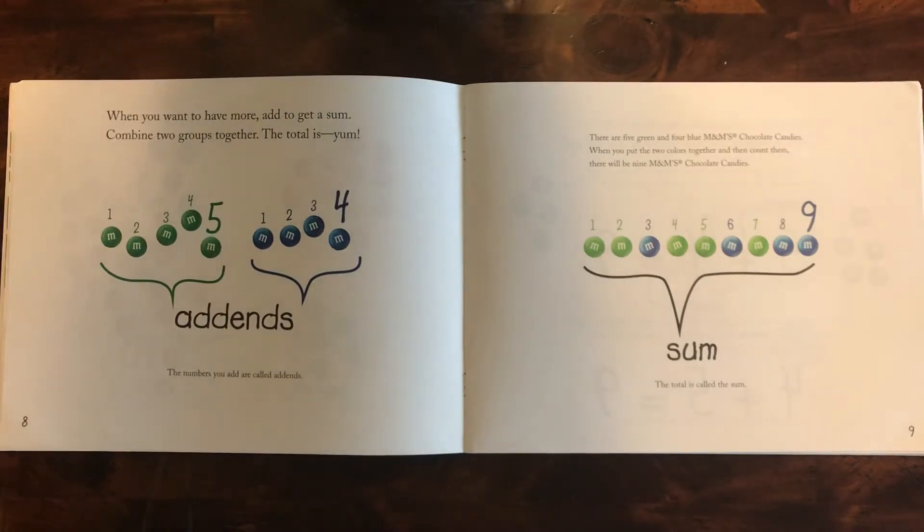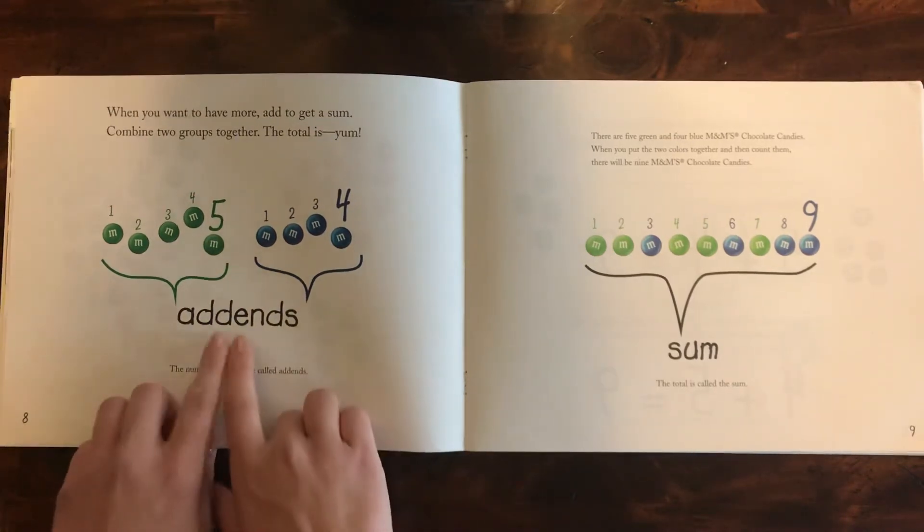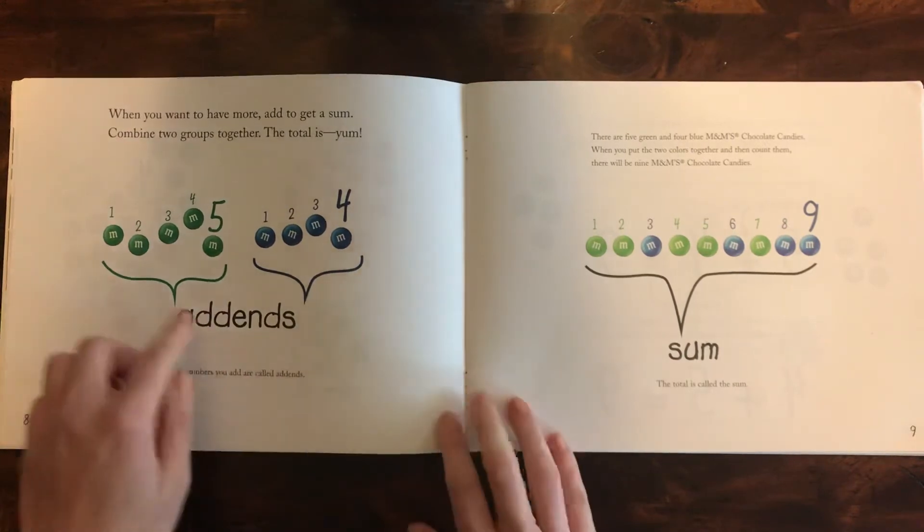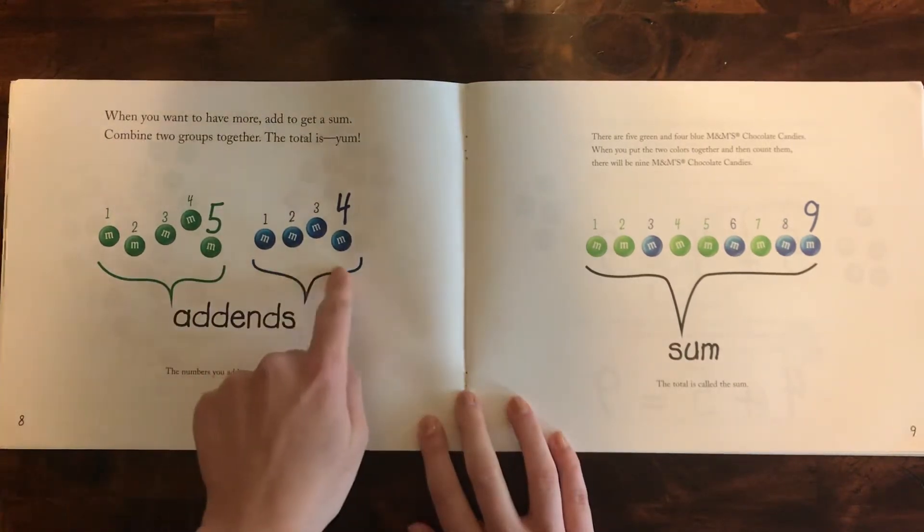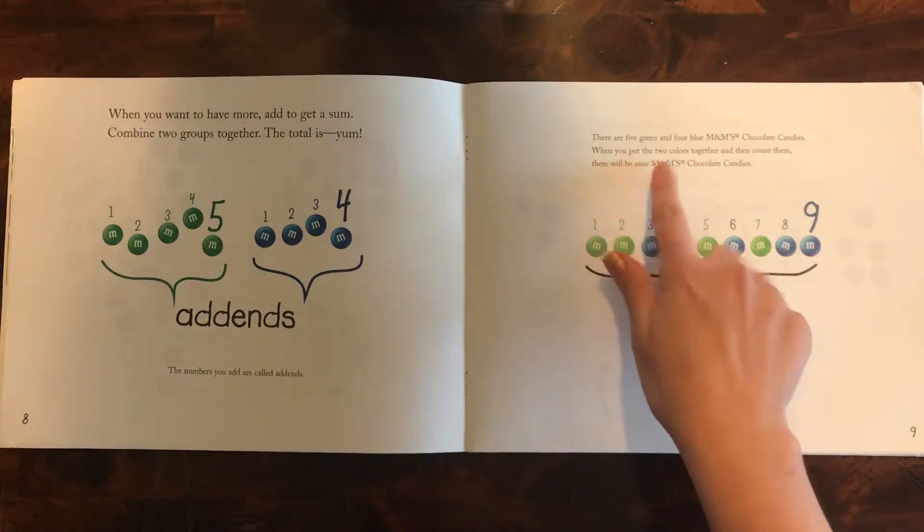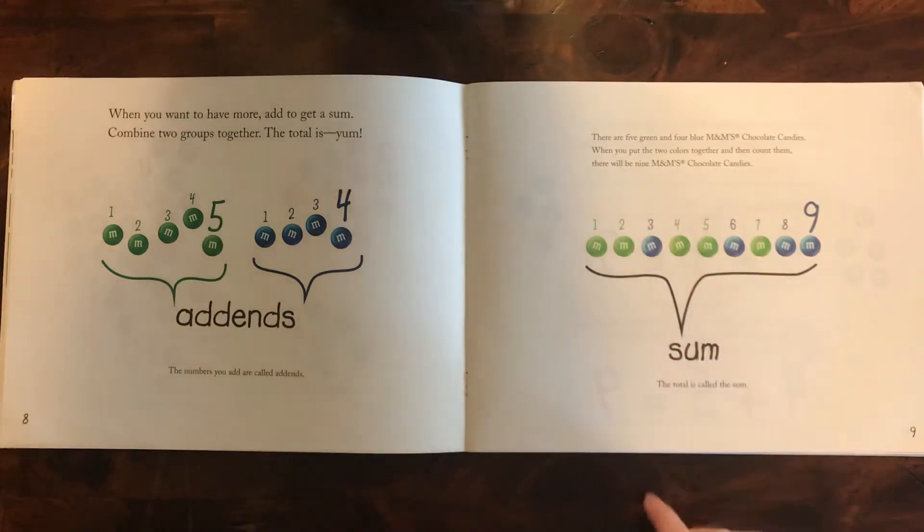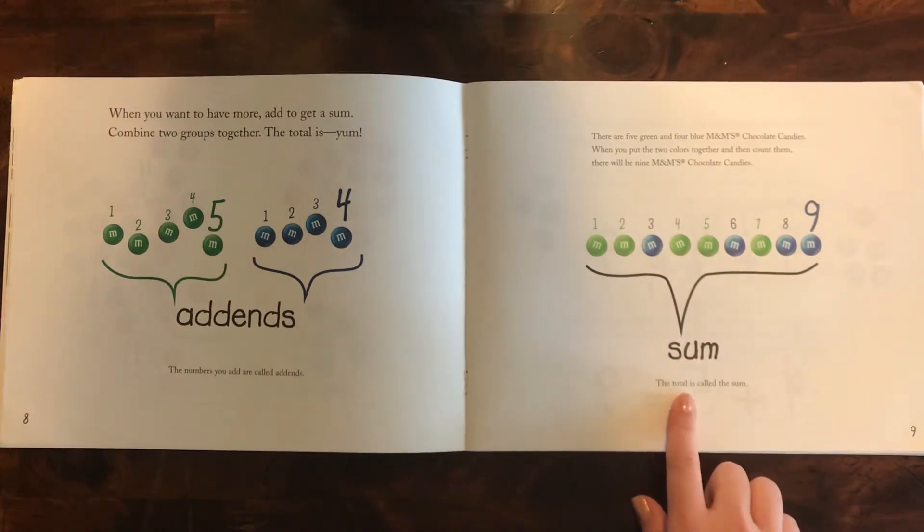When you want to have more, add to get a sum. Combine two groups together. The total is yum. The numbers you add are called addends. So they have five green and four blue. There are five green and four blue M&M's. When you put the two colors together then count them, there will be nine M&M's. The total is called the sum.